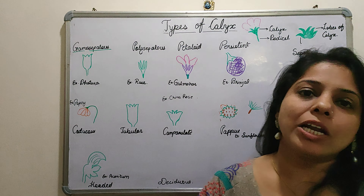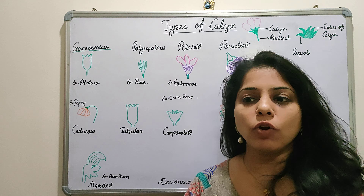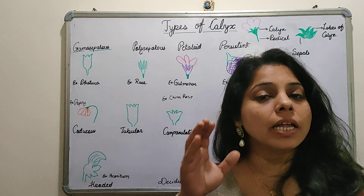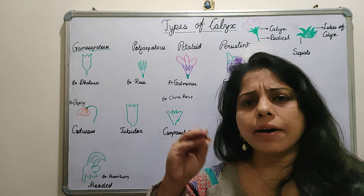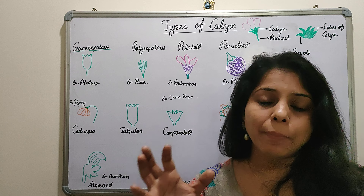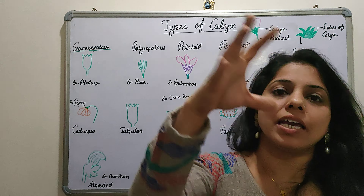Next is Petaloid calyx. Petaloid is the condition when you cannot easily discriminate between calyx and corolla, because the calyx is not green — it is colored, resembling the color of petals. You will find it very similar to petals, and that is why you will not be able to distinguish whether it is calyx or corolla.